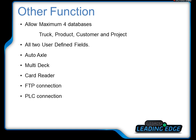Regarding other functions: the application allows a maximum of four databases, such as truck, product, customer, and project, depending on which application you use. The database names like product, customer, and project can be changed to other names — for example, driver or designation. There are also two user-defined fields, which can be used to enter a PO number, slip number, or similar information.